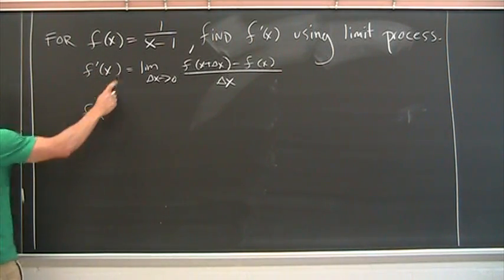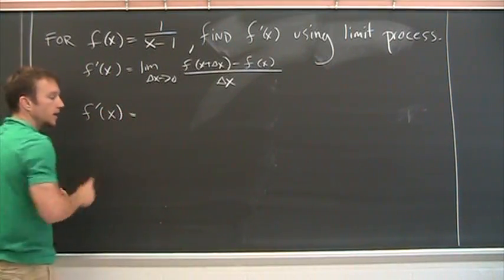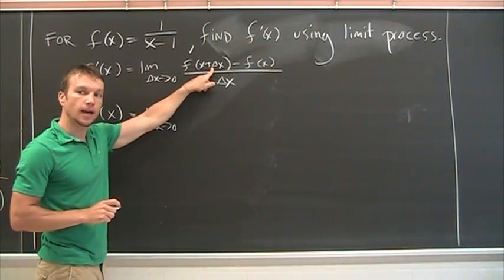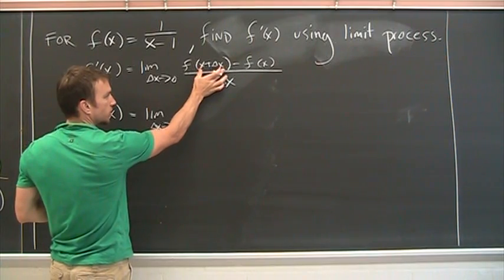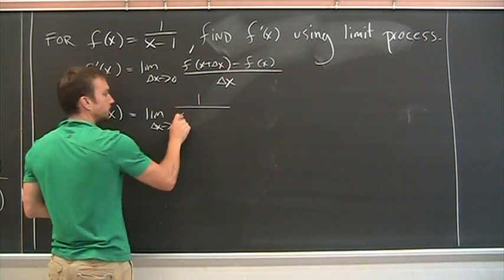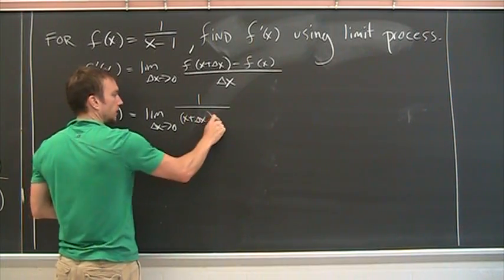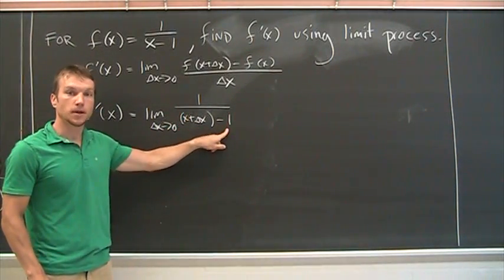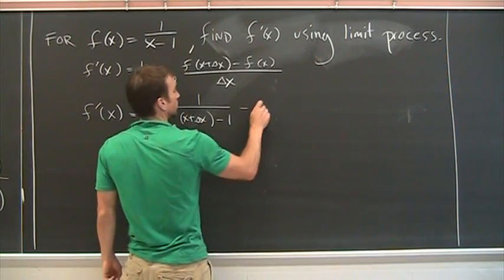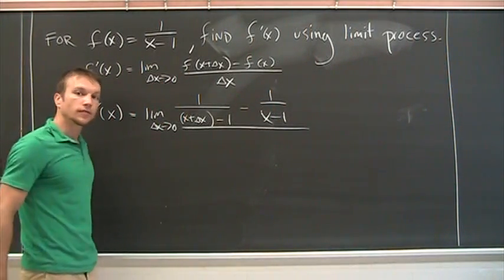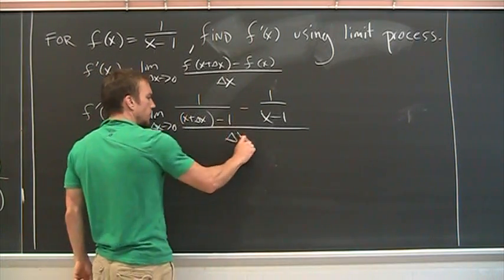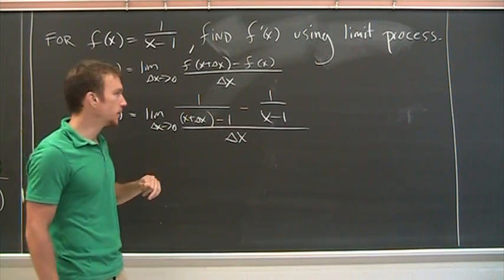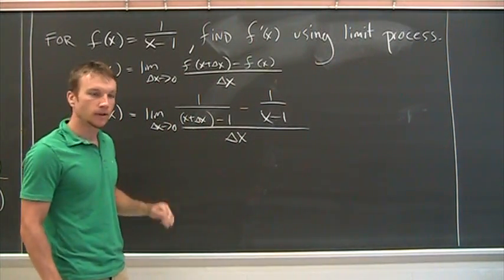So by this definition for this function 1 over x minus 1, f prime of x is the limit as delta x goes to 0. f of x plus delta x, so that means I'm just going to substitute x plus delta x in for that x. That's f of x is 1 over x minus 1, so f of x plus delta x is 1 over x plus delta x minus 1 minus f of x, all divided by delta x. You might also use h for that change in x. You see that pretty often in textbooks as well.